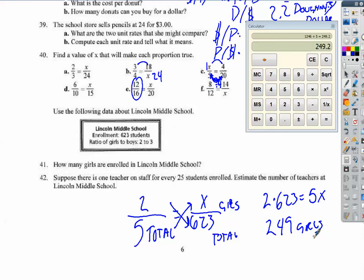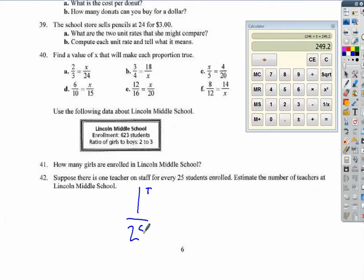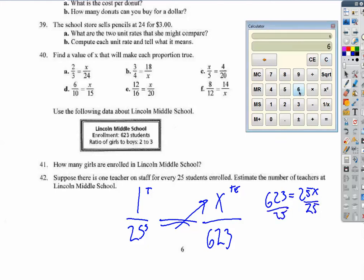Suppose there is one teacher on staff for every 25 students. So that's one teacher for every 25 students. And assume for a moment that you can't go over that ratio. So, if we have teachers, we have x number of teachers, and we have 623 students. So, we can use cross multiplication again. 623 is equal to 25x. So divide both sides by 25. So 623 divided by 25. So, it has to be 25 teachers to make that school run.